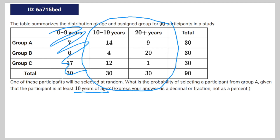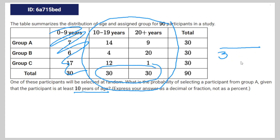Of the people that are at least 10 years of age, there's going to be a total of 30 plus 30. So the probability is going to be over 30 plus 30, which is, of course, 60.